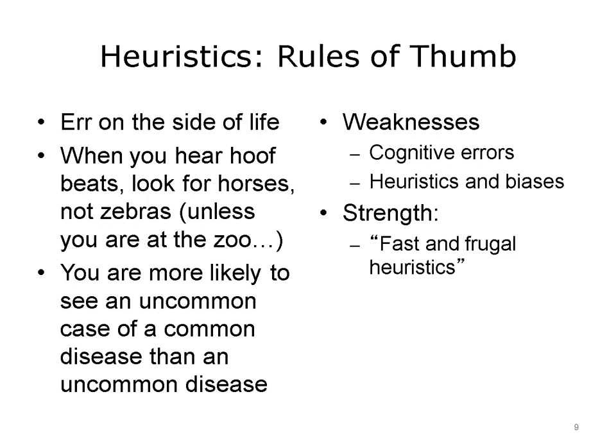Another approach clinicians use for more efficient diagnostic reasoning is to employ heuristics, or rules of thumb. Three examples are considered. First, 'err on the side of life,' which suggests emphasizing conditions that are most life-threatening or most conducive to treatment. Second, 'when you hear hoofbeats, look for horses, not zebras,' which advocates thinking about common diseases first because they are much more likely to occur. Third, 'you are more likely to see an uncommon case of a common disease than an uncommon disease,' meaning that even if it seems like a rare condition, it's more likely to be a common one. There are drawbacks to using heuristics because they can lead to cognitive errors and biases; however, they provide a fast and frugal reference point, facilitating a working diagnosis with a minimum of resources.